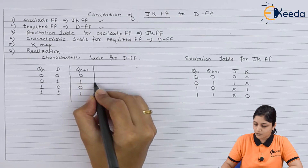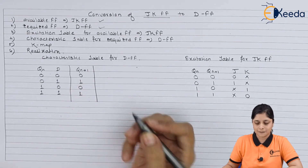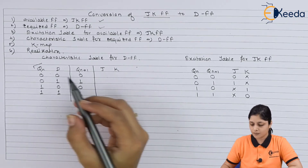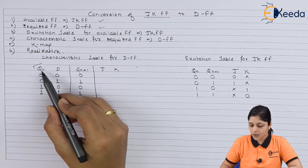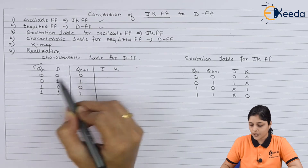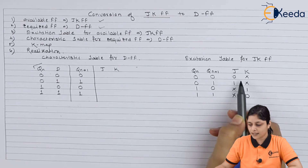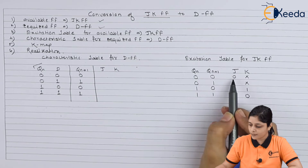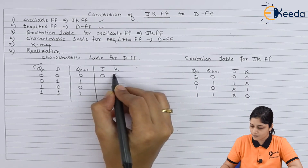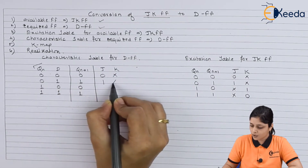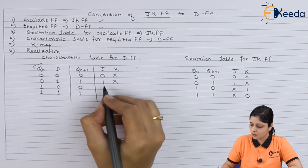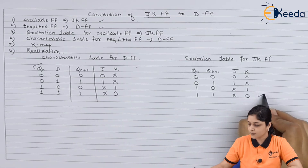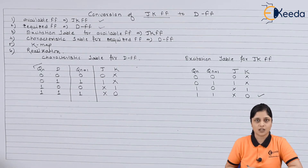The next step is to append the J and K columns to the table. According to Qn and Qn+1, you refer to the excitation table and write down the values of J and K. For 0-0: 0, X; for 0-1: 1, X; for 1-0: X, 1; and for 1-1: X, 0.